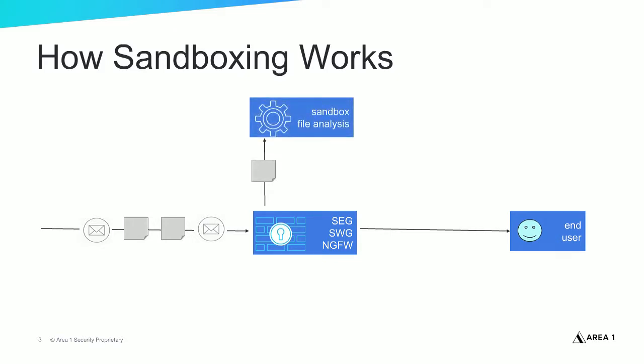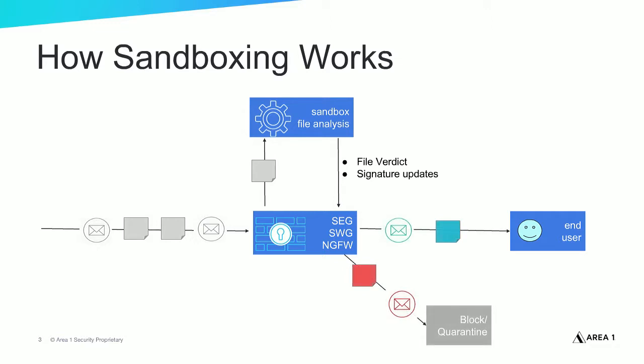Because legacy security technologies often miss malicious code hidden in files, over the past few years many security teams have added sandbox technology to their legacy security infrastructure to better detect hidden malware. With sandbox technology, incoming files are executed in the sandbox environment and their behavior is analyzed to judge whether or not they're malicious. If a file is judged to be malicious, ideally it's blocked or quarantined, but in some cases the file is delivered to the end user before the file verdict is known.